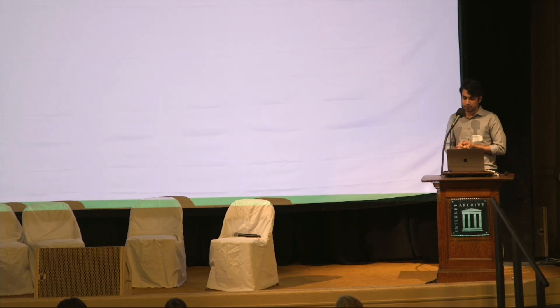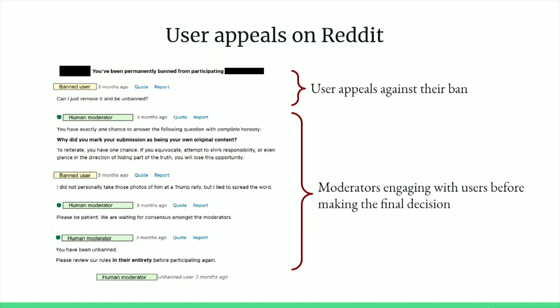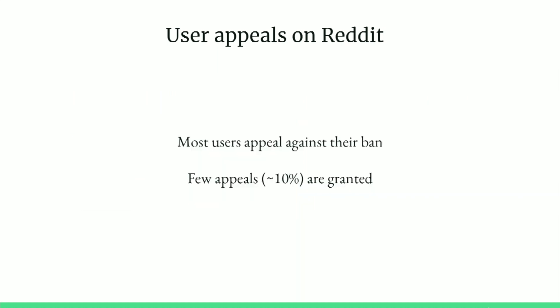I'll spend a few minutes talking about how ban appeals work on Reddit. Most users, when informed they've been banned from a community, would like to appeal. Once a user appeals, mods conduct a background check — they look at the user's profile and ask certain questions, as you can see in the screenshot, to gather more information before making their final decision. We found that most banned users do appeal, but in reality very few appeals are actually granted.